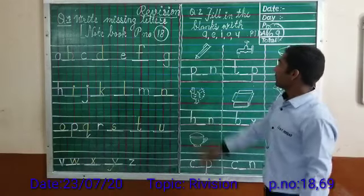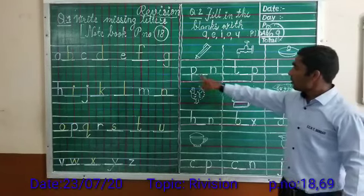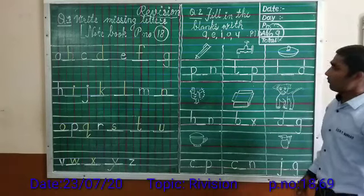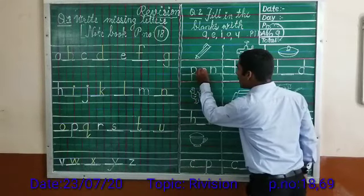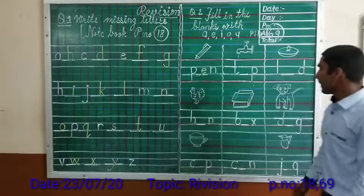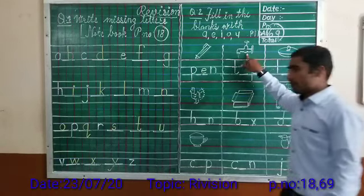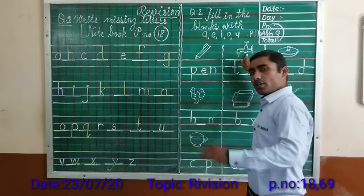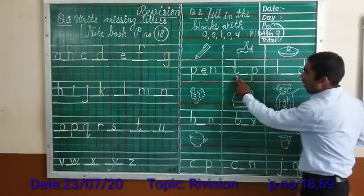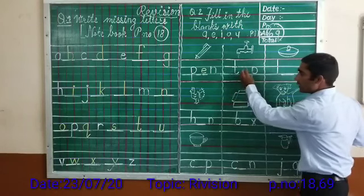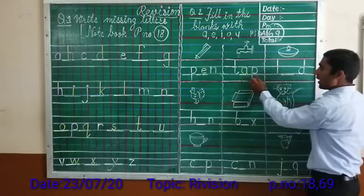Let us see the first picture — here. Pain, right? What is missing? Which vowel comes here? E. P, E, N — pain. Next: tap. Tap means chappi. What is missing here? A. T, A, P — tap.